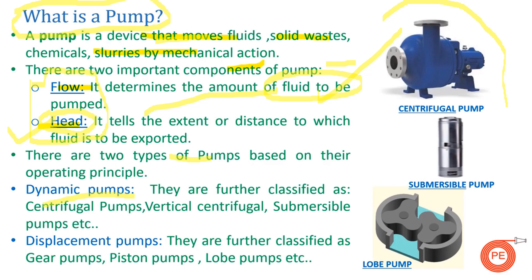From a principle point of view, there are two types of pumps: dynamic pumps and displacement pumps. In dynamic pumps, a rotating rotor uses rotating forces to transmit fluids from one place to another. These can be further classified as centrifugal pumps, submersible pumps, and vertical centrifugal pumps. In displacement pumps, we have mechanical devices like gear pumps, piston pumps, and lobe pumps, which use positive displacement to transmit fluid.